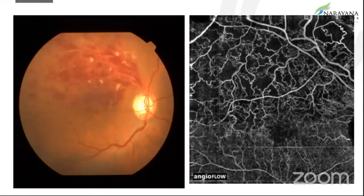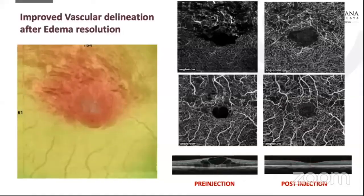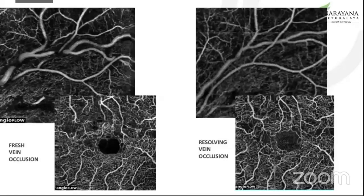This is another patient — again, the superficial and the deep — and you can see the capillary dropout areas. One important thing to remember in patients with edema is that it can obscure the vasculature; it does not necessarily mean that there is loss of vasculature. You can see that the vessels are now seen quite well after injection once the edema has started resolving. We need to be clear that not everything that's not seen is actually absent — with resolution of the edema, the vasculature could be seen back again, improving the prognosis.